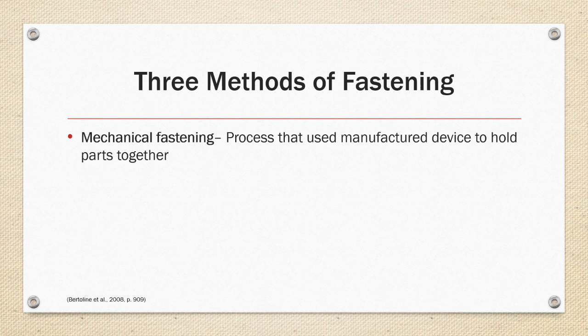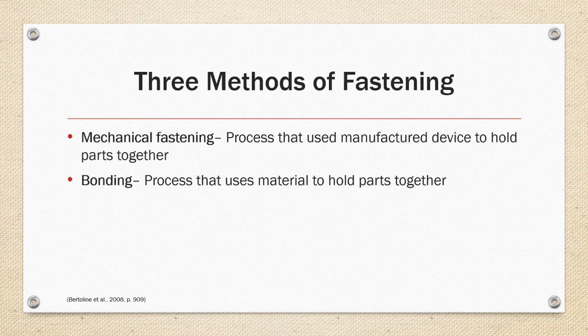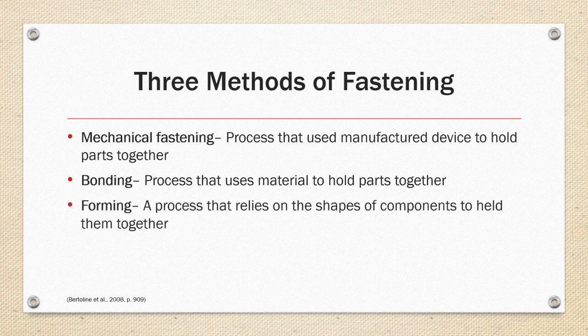There are three major methods of fastening. Mechanical Fastening, a process that uses manufactured devices to hold parts together. Bonding, a process that uses material to hold parts together, such as adhesives. And Forming, processes that rely on the shapes of components to hold them together.